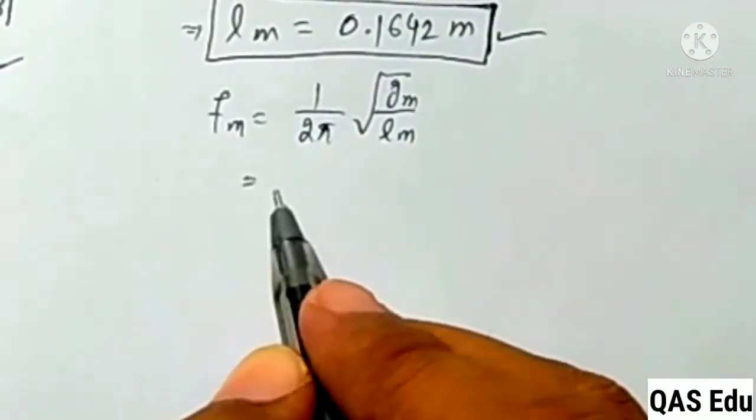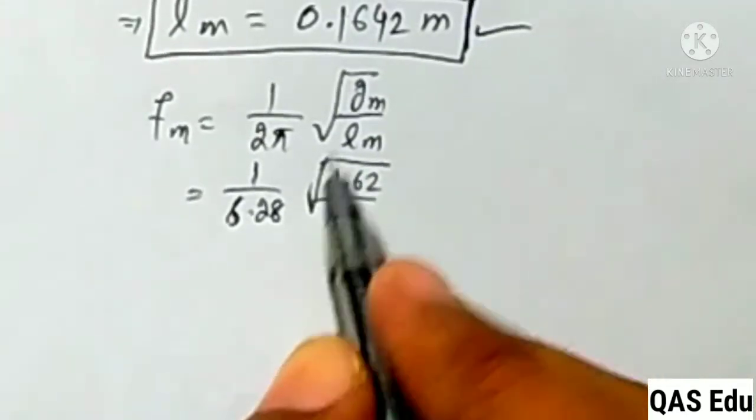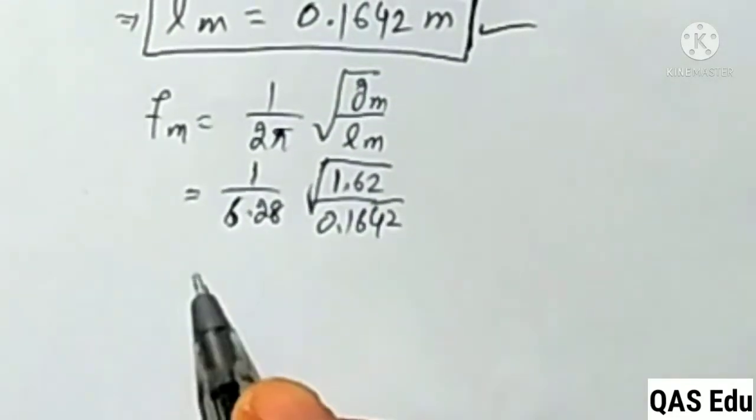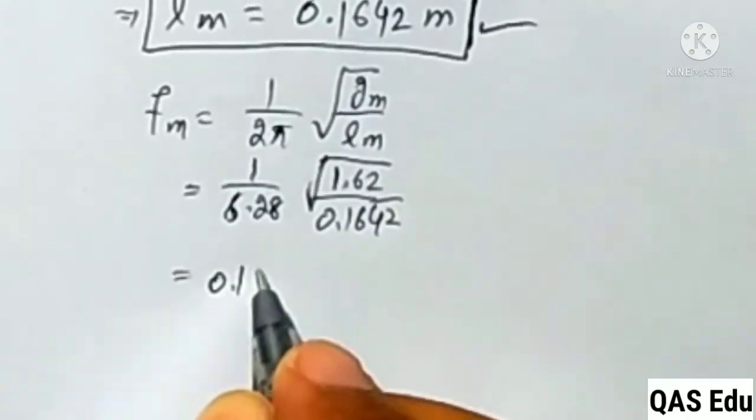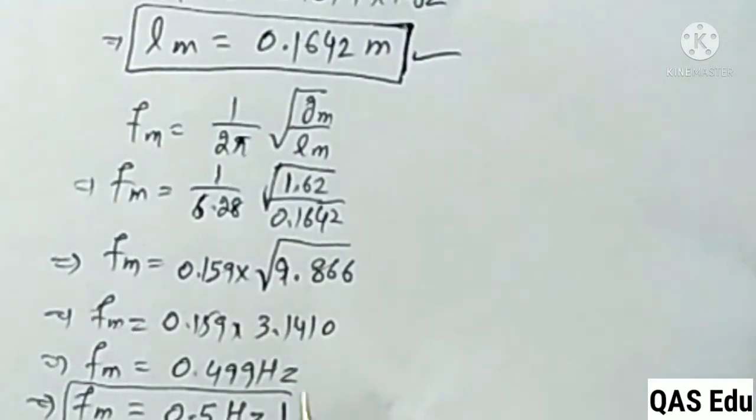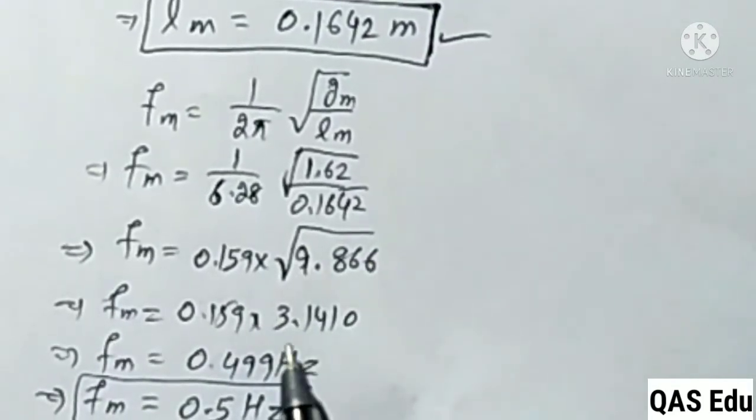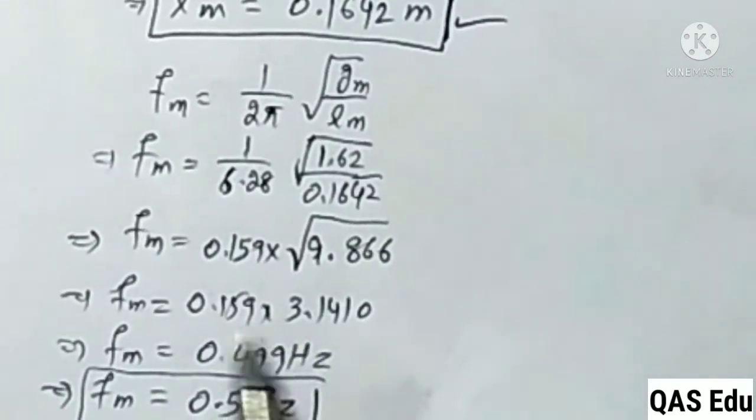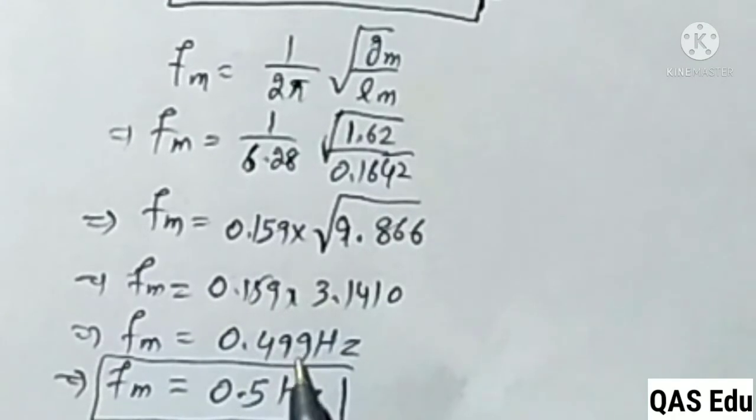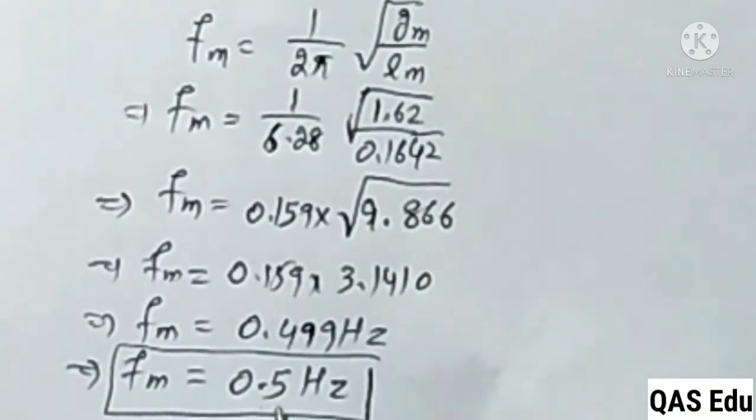Frequency on Moon: fm = 1/(2π)√(gm/Lm) = 1/6.28 × √(1.62/0.1642) = 0.159 × √9.866 = 0.159 × 3.141 = 0.499 Hz, approximately 0.50 Hz.